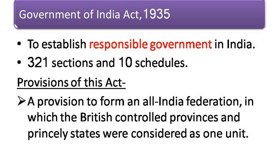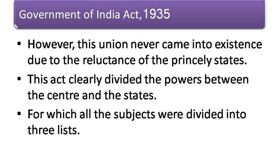Under this act, there was a provision to form an all-India federation, in which the British controlled provinces and princely states were considered as one unit. However, this union never came into existence due to the reluctance of the princely states.